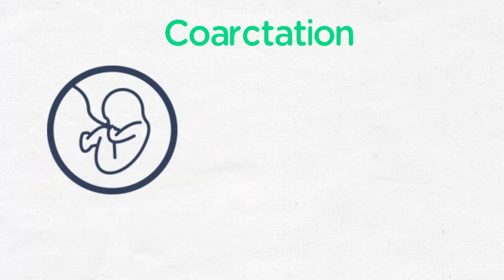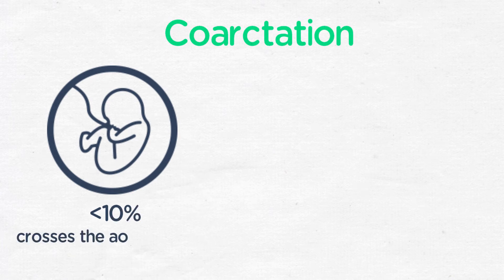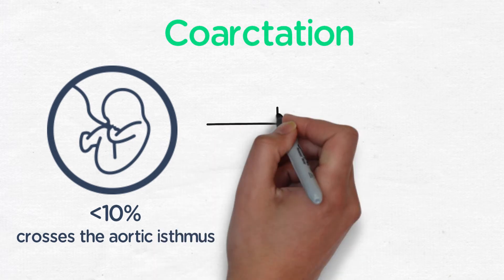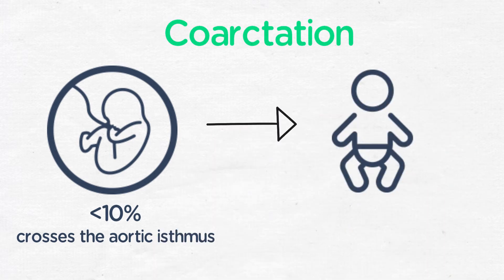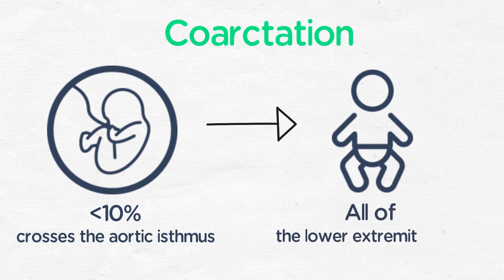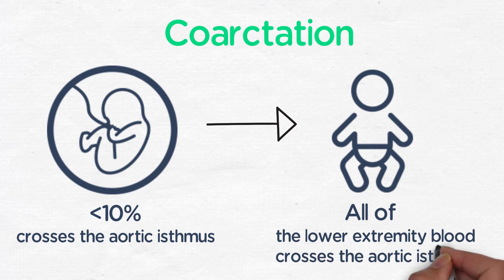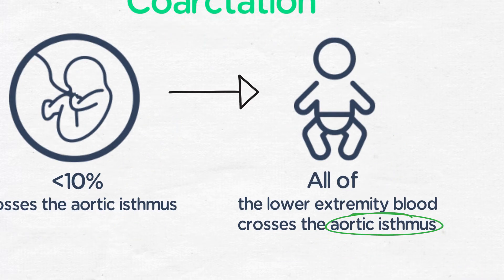In fetal life, less than 10% of the combined cardiac output crosses the aortic isthmus, since the majority of lower extremity blood is perfused by the arterial duct which is shunting from right to left. At birth, as the PDA closes, the entire amount of cardiac output for the lower half of the body must pass through the aortic isthmus. This is the area at risk for coarctation.